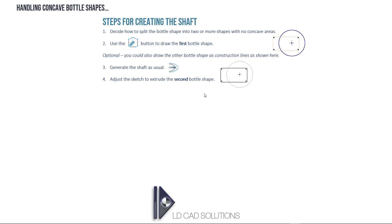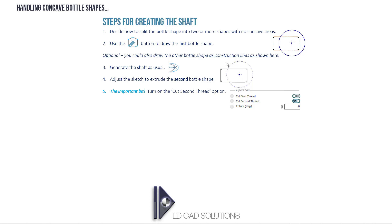After that you have a shaft with a single circular bottle shape thread cut in it. You go back into the app, change the sketch to extrude the second bottle shape. The most important bit you mustn't miss: turn on the option at the top of the form to cut the second thread, not the first. If you leave it on the default 'cut first thread' it will delete the first thread. If you say 'cut second thread' you'll get a combination of both bottle shapes. Leave rotation and translation at zero, then hit generate again to cut the second thread.